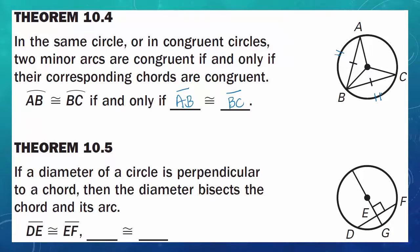Theorem 10.5: if a diameter of a circle is perpendicular to a chord, then the diameter bisects the chord and its arcs. If line segment DE is congruent to line segment EF, then arc DG is congruent to arc GF. So arc DG is congruent to arc GF if the diameter bisects a chord and creates a perpendicular angle.